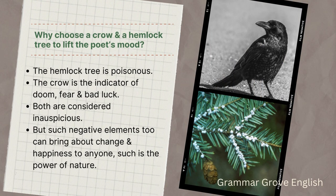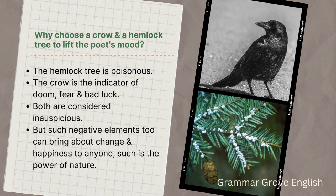Why is the poet talking about a crow and a hemlock tree? Why mention these two elements out of all the other things in nature? Usually in European countries, a black crow is a sign of bad luck — it is a bad omen. So is a hemlock tree. A hemlock tree is poisonous, and therefore it is considered very inauspicious, thought to bring misfortune. Whenever you see a black crow, that means something bad is going to happen. These are considered negative elements of nature. But here, the same crow and the same poisonous tree are helping the poet lift his mood. The poet uses the crow to show that a black crow is not a sign of bad luck — it is not a bad omen at all.